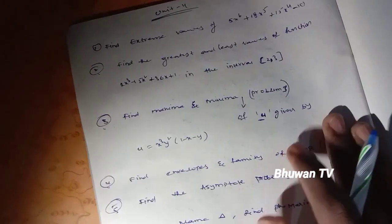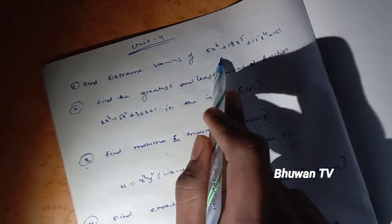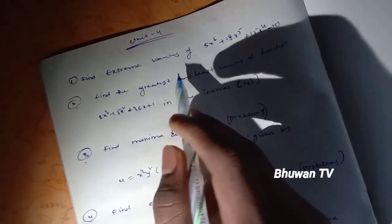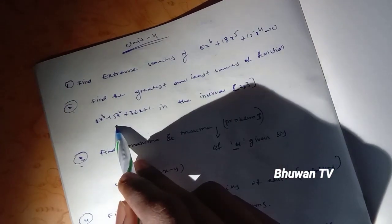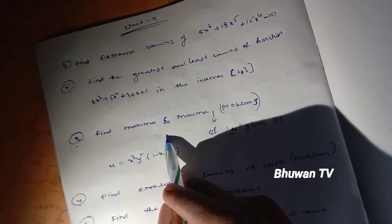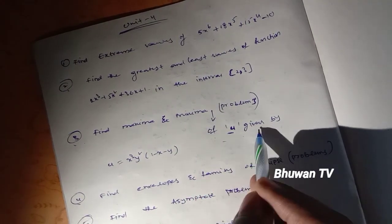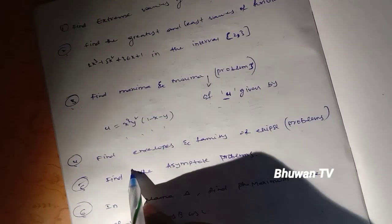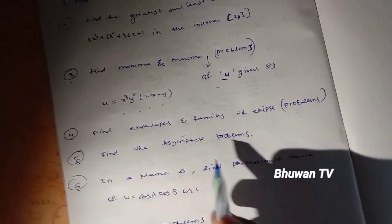Fourth unit: find extreme values of 5x⁶ plus 18x⁵ plus 15x⁴ minus 10. Find the greatest and least values of 2x³ minus 15x² plus 36x plus 1 on the interval [2, 3]. Find maxima and minima of u equals x³ y² (1 minus x minus y).